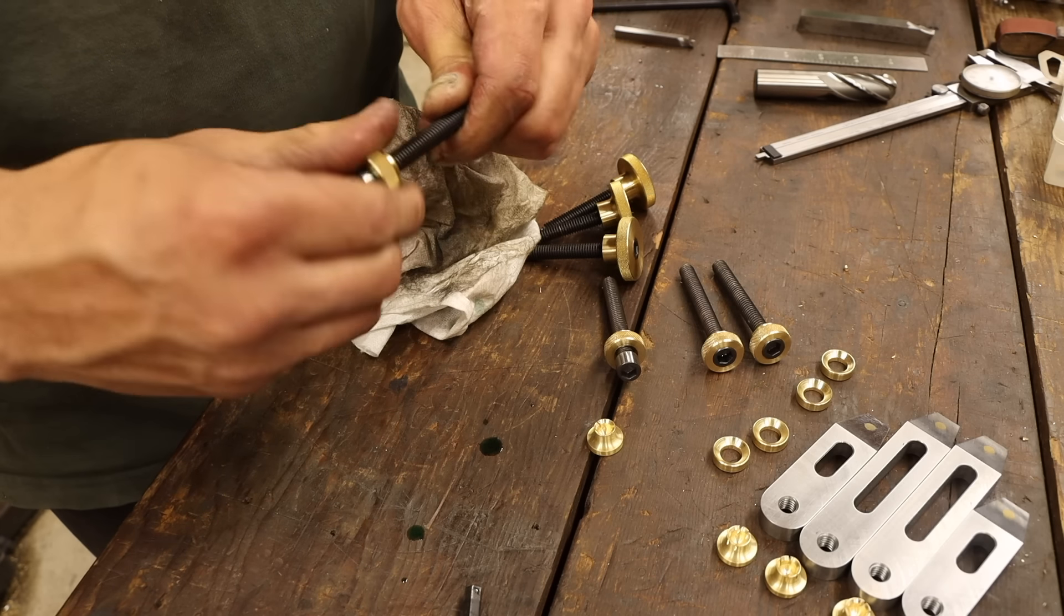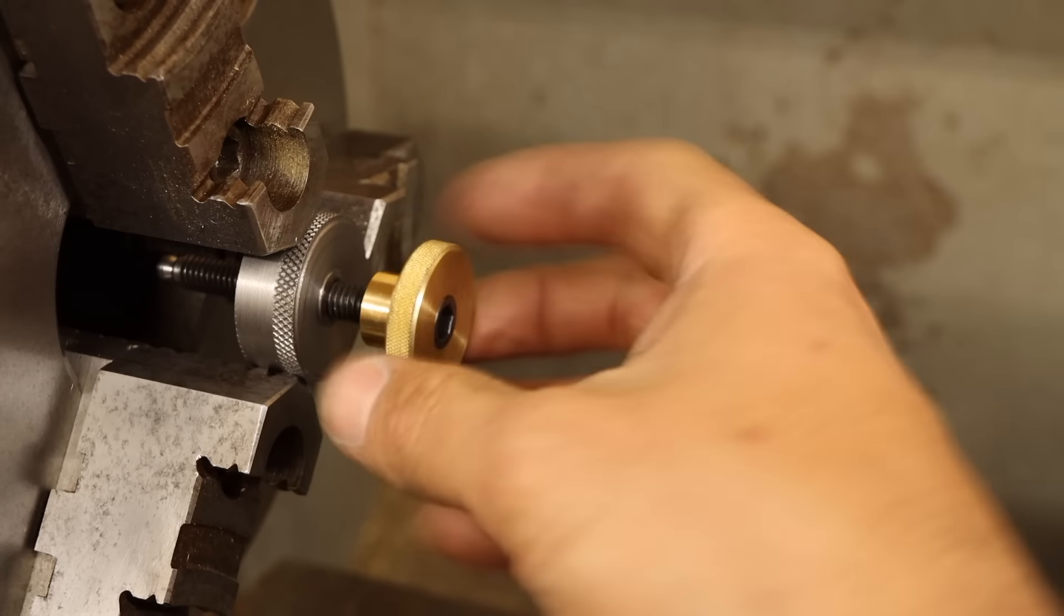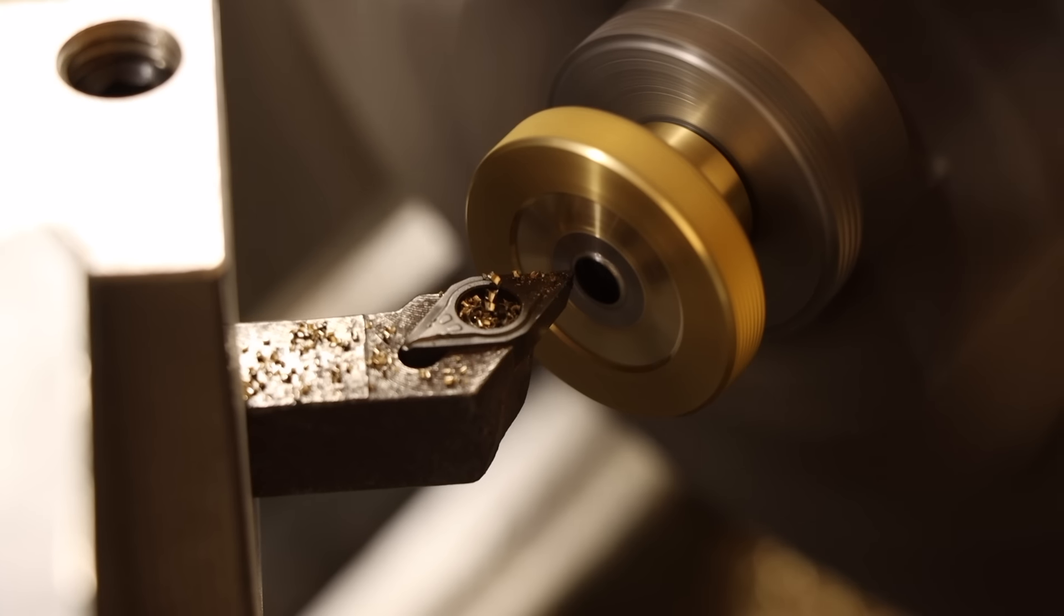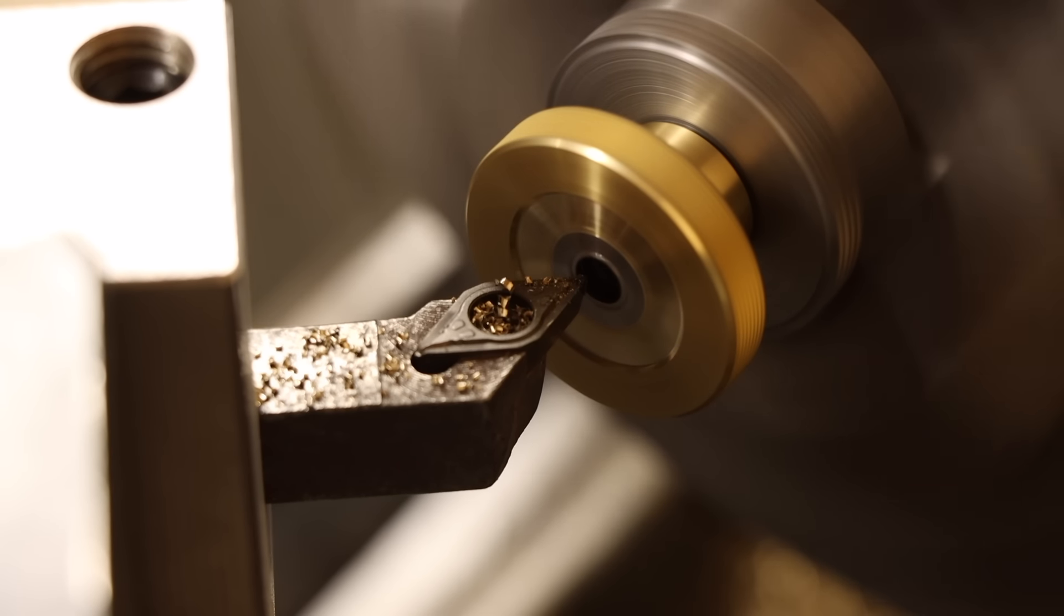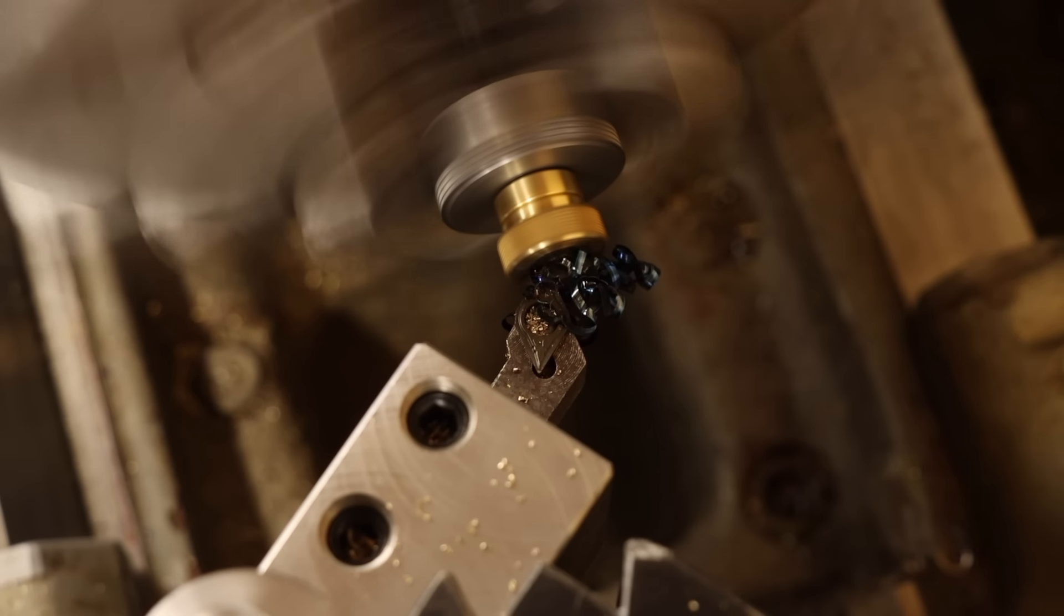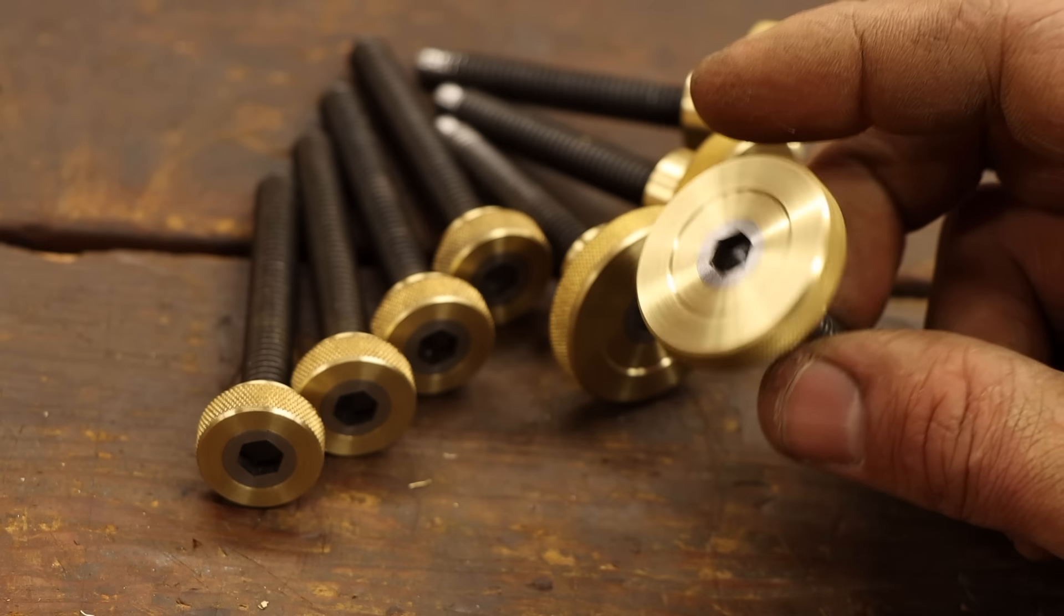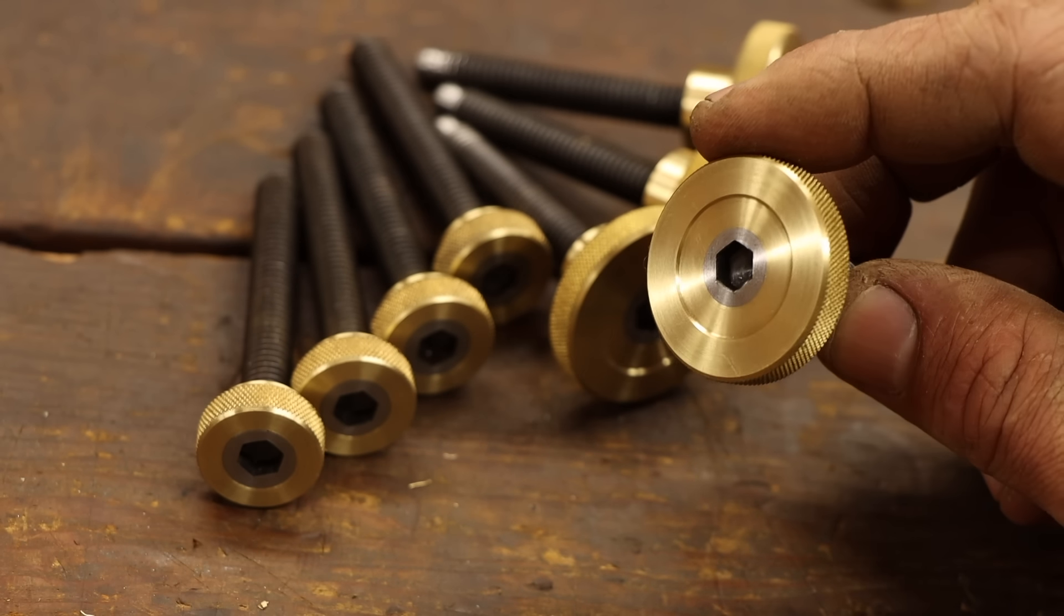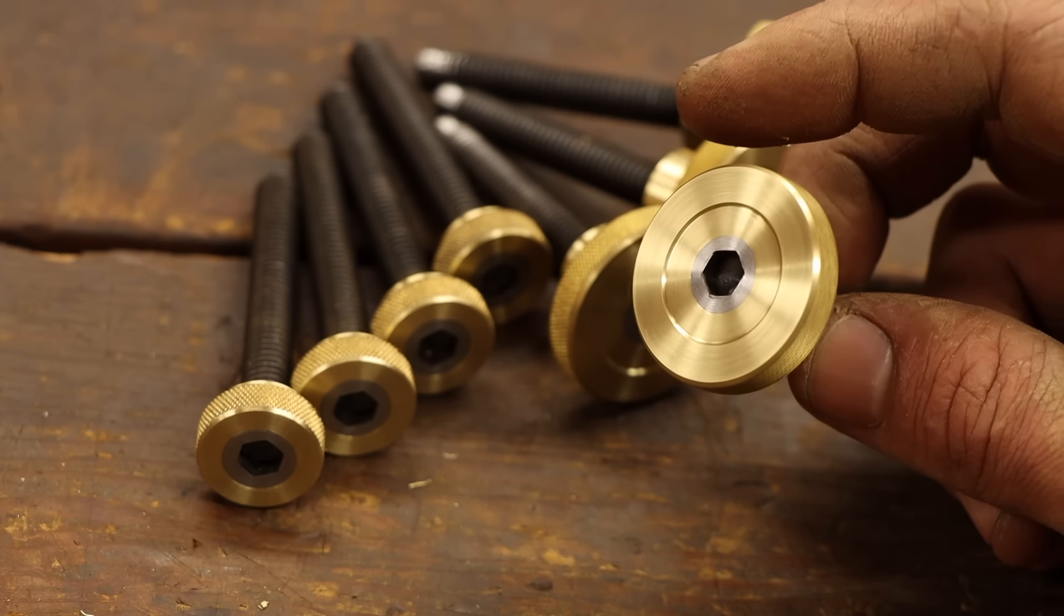Threaded back into the lathe, the big knobs get a final facing with a nice decorative hollow. Then on the little knobs, just a facing operation to bring the screw heads flush. Now these knobs would probably work just fine for what I need them for, but there's still one more thing I want to add. The scallops on the outside. You know, to be fancy.